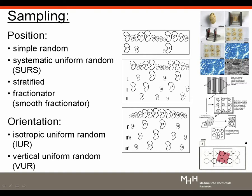There is also stratified sampling — defining subsets such as each lobe of the lung as a stratum and sampling within each lobe separately. Another important term is the fractionator: keeping track of the sampling fraction used for further analysis along all steps of the sampling chain. Each systematic uniform random sample here represents one-third of the whole organ, giving a known sampling fraction of one-third that can be used for further analysis.